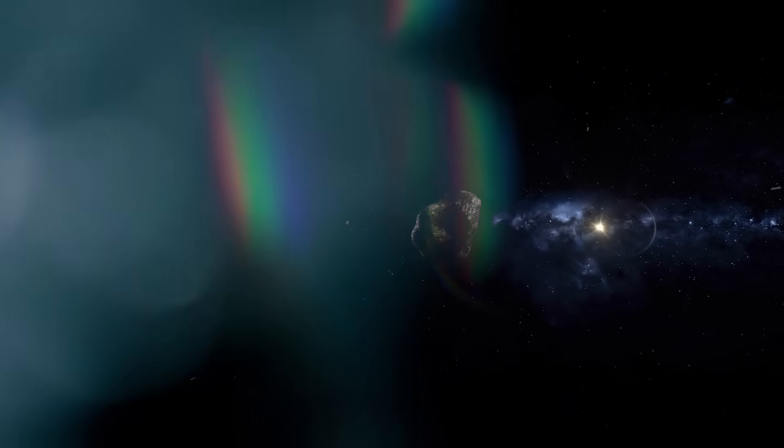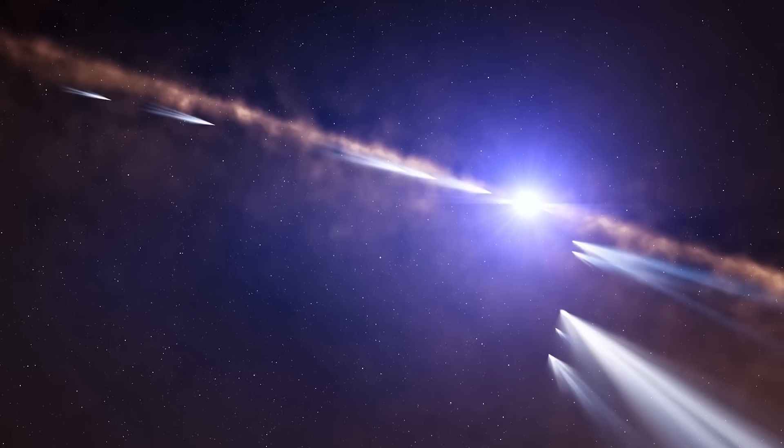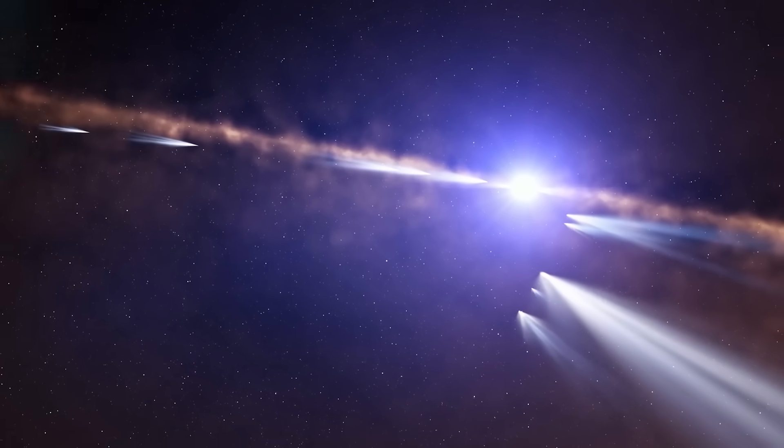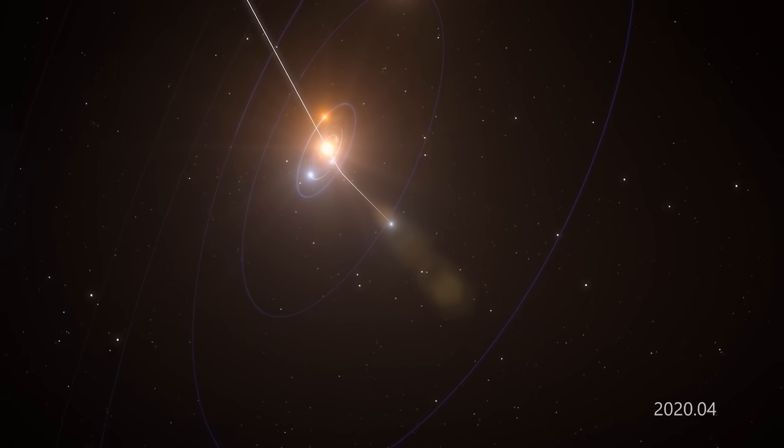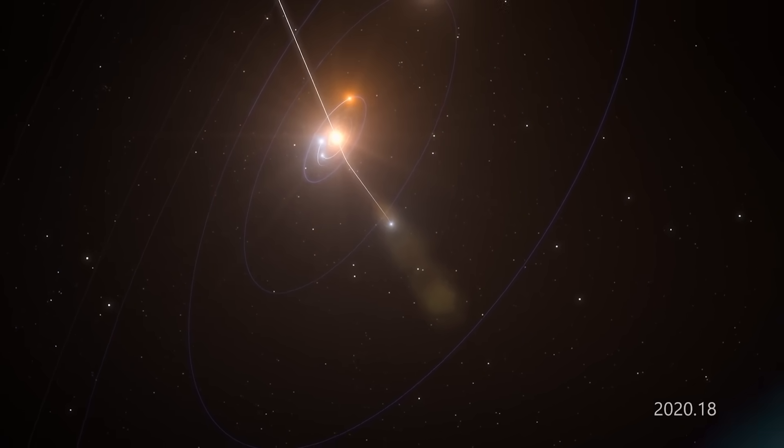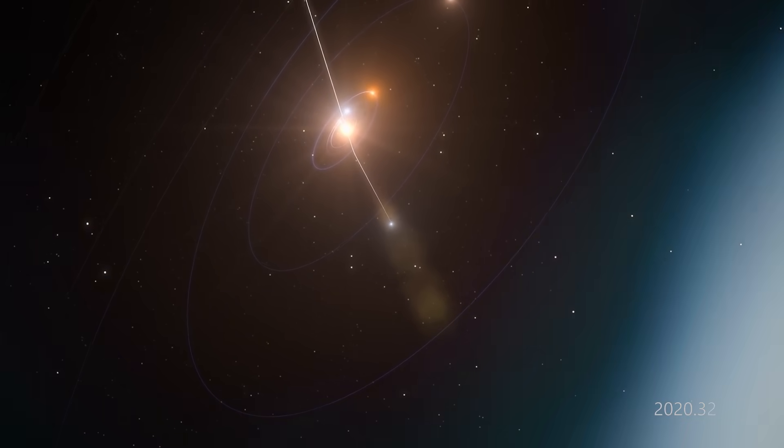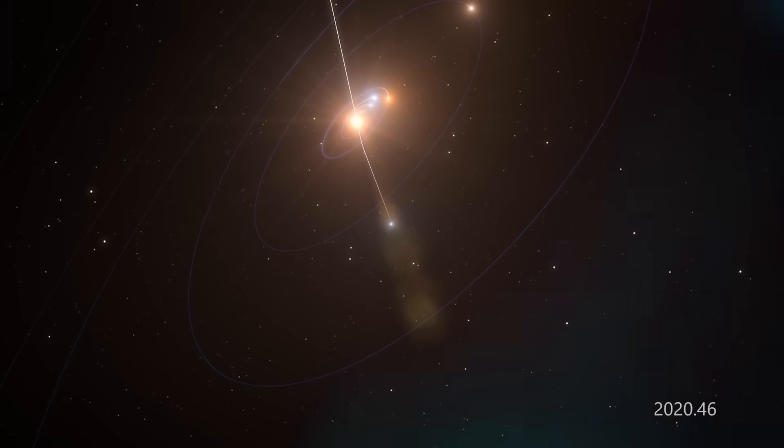To understand how serious this discovery is, we have to look at the two interstellar objects that came before it. In 2017, Oumuamua burst into the scientific world with its strange, elongated shape, lack of comet tail, and mysterious acceleration after passing the sun despite showing no signs of gas or propulsion.